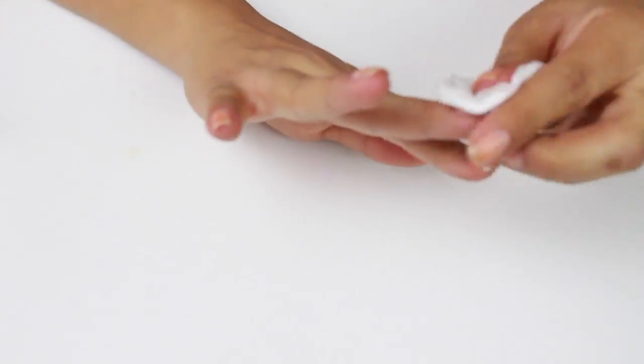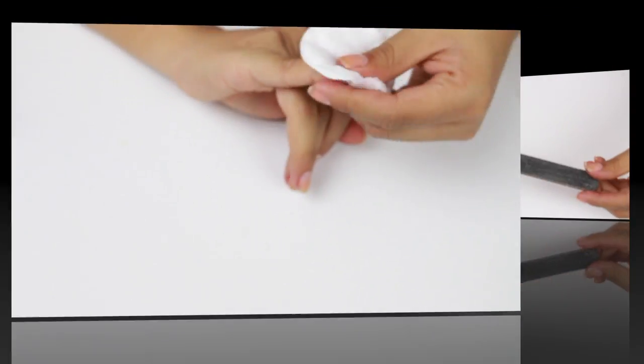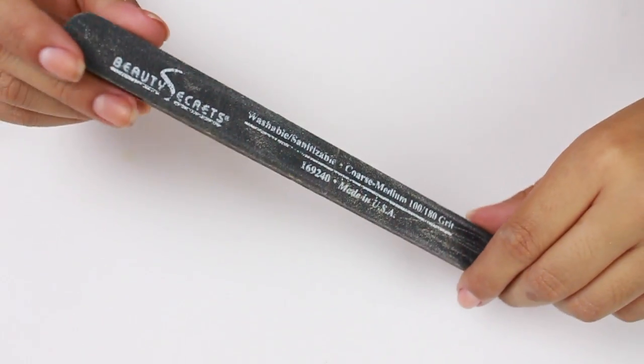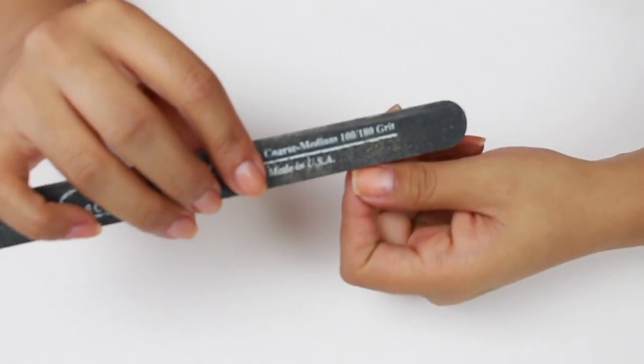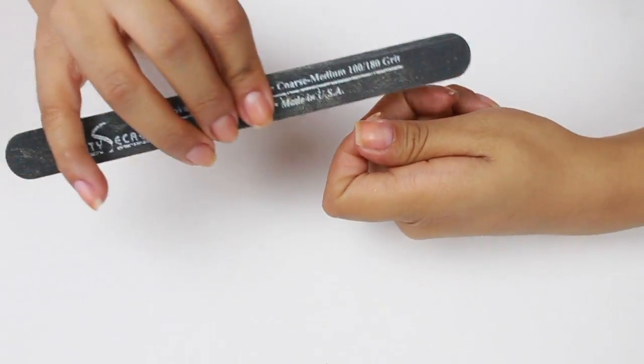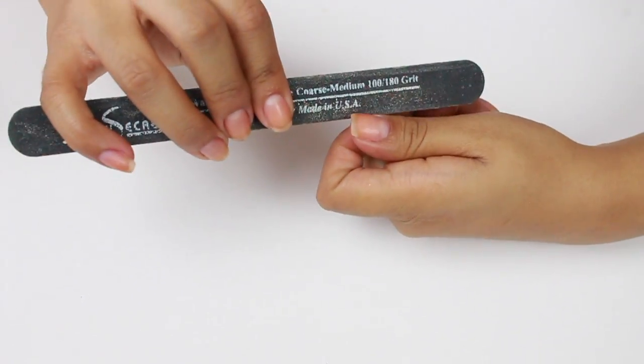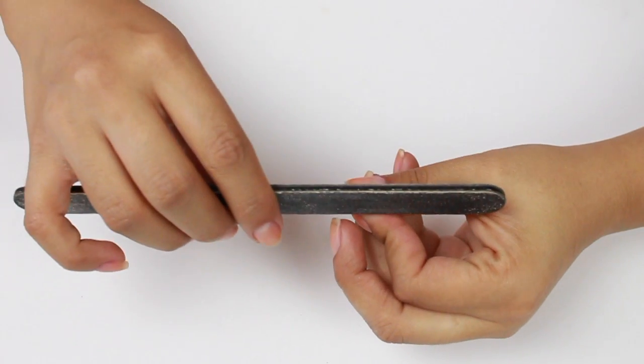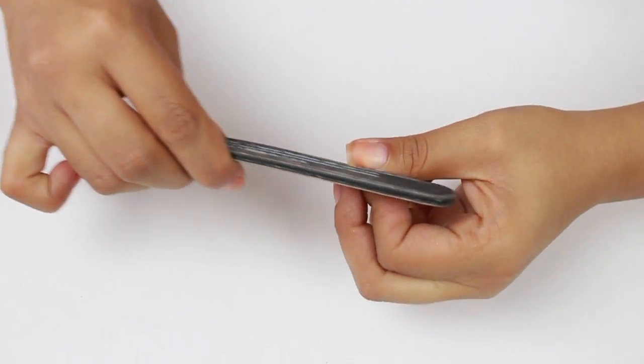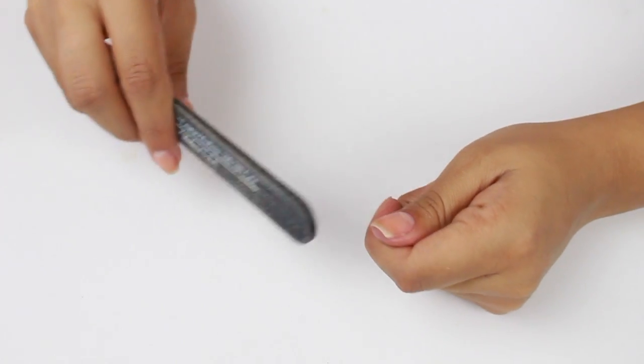I usually get another little bit of acetone and just do a final rundown to ensure that everything's clean. Then I proceed to filing. This one's a 100 by 180 grit file. You can use different variations of it. This one's a little rounded; I prefer the square one but I don't know where I left it.